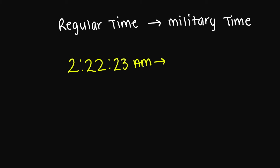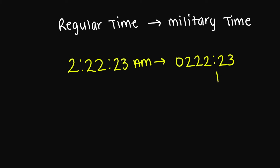So let's look at this regular time here. I'm going to add a zero in front of my hour number because this is a.m. So we have 0222:23 hours. Or if you add the colon, it's going to be 02:22:23 hours.